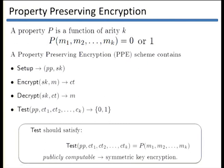In our case, we allow the testing algorithm on the ciphertext to be something different; we just require that it outputs the same property. Since we require that this algorithm be publicly computable, we need to use symmetric-key encryption. If we allowed public-key encryption, someone could create ciphertexts for any message and, for non-trivial properties, extract too much information from a challenge ciphertext.